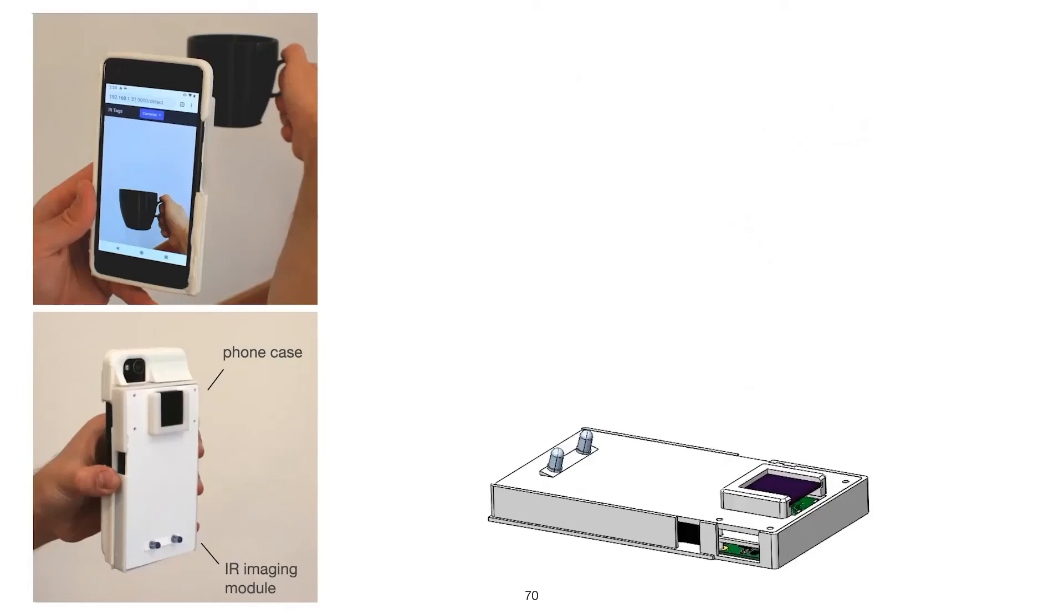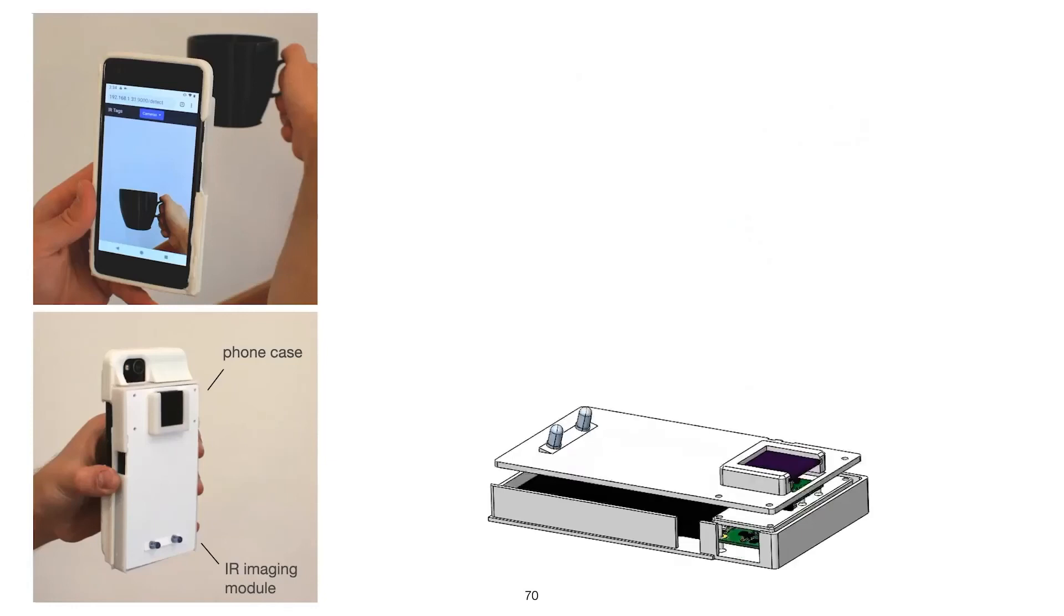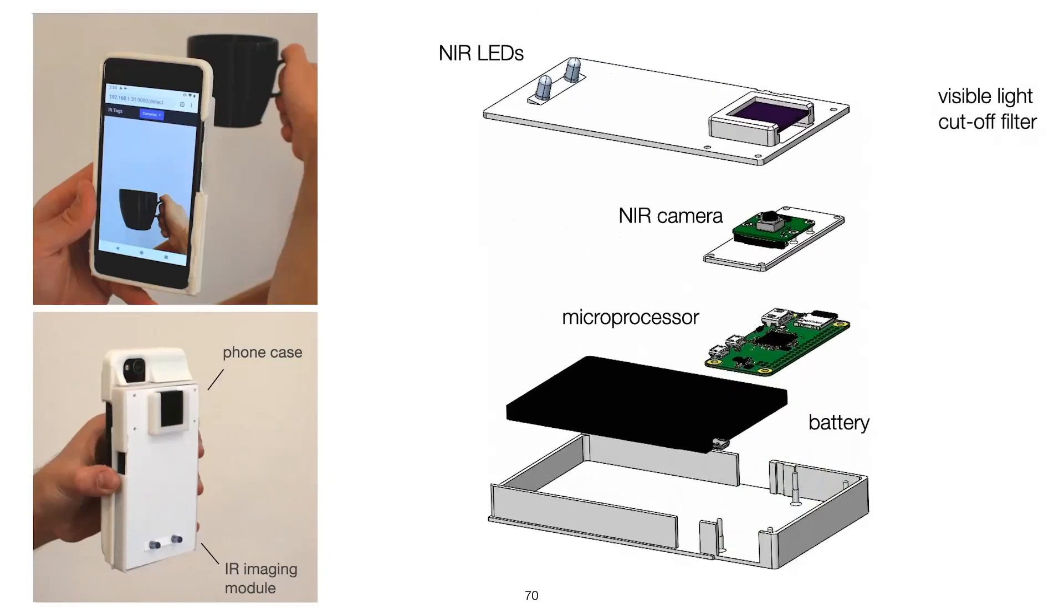Next, for detecting the tag, the user can attach our infrared imaging module to their smartphones. The module consists of low-cost components as shown here. This module is not necessary if you have a smartphone that already comes with an IR camera, such as OnePlus 8 Pro.